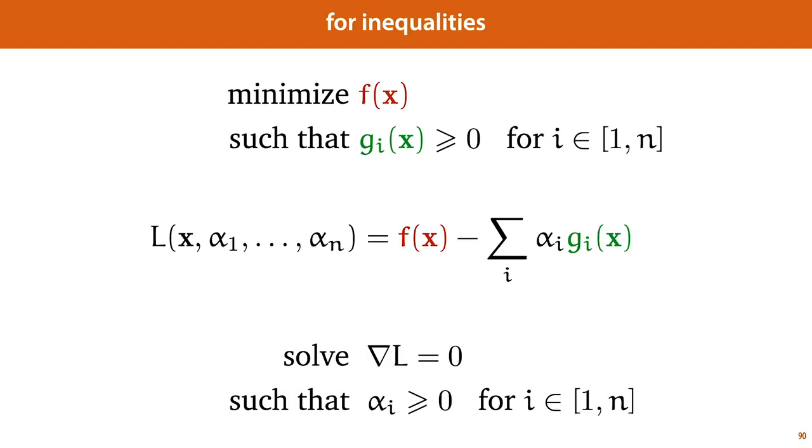That looks like this. If we have n constraints, each defined by a function g_i, then we simply add a term to our L function for each of them, and each of these terms gets its own separate multiplier alpha_i. We then again find the point for which the gradient of this function is equal to zero, subject to the constraint that all of these separate alpha_i's need to be positive.